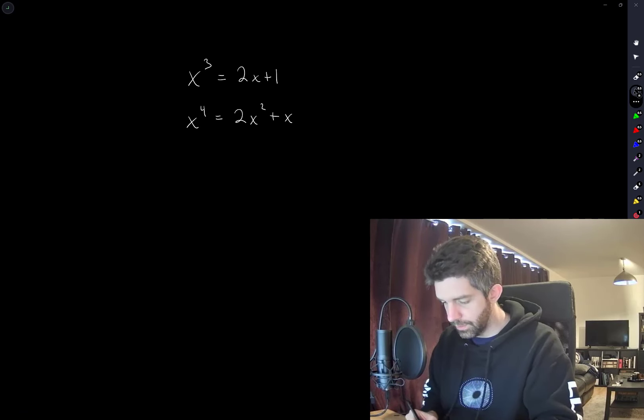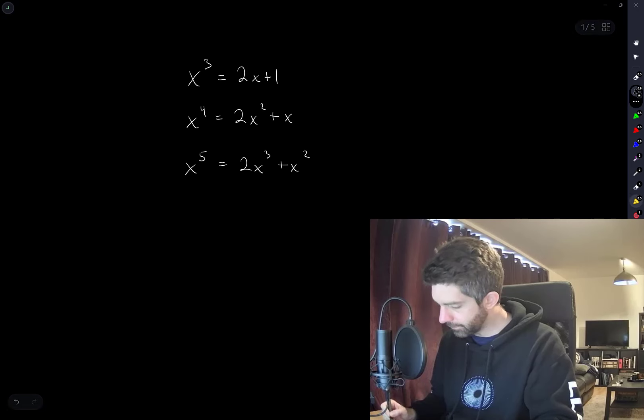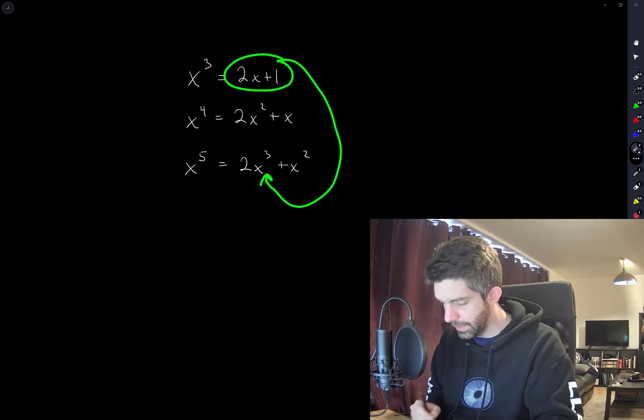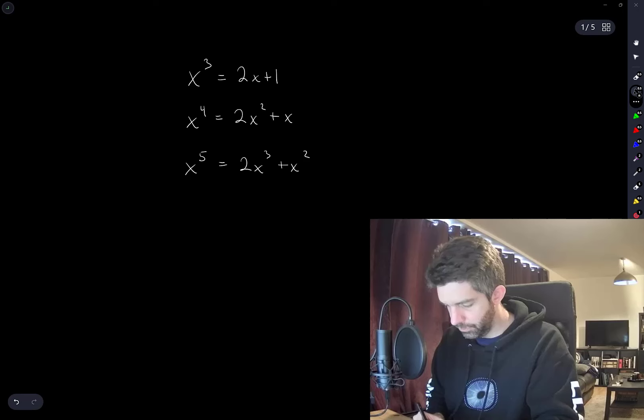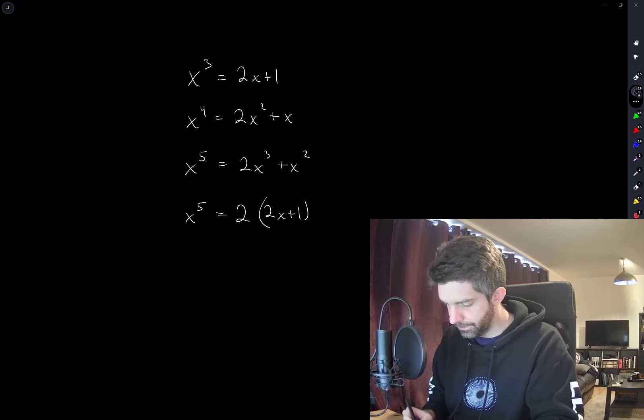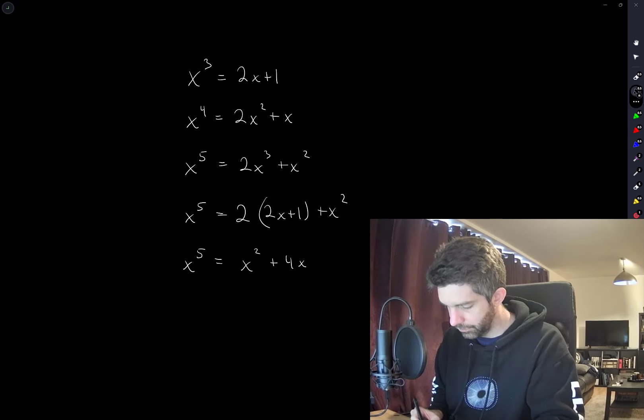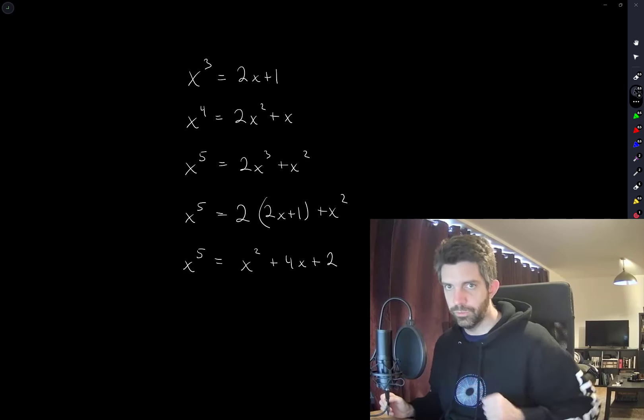And to get the last equation, I'm going to multiply both sides by x again. x to the 5 is equal to 2x cubed plus x squared. And then I'm going to use the original relation that x cubed is equal to 2x plus 1 and substitute that in here. So we have x to the 5 is equal to 2 times 2x plus 1 plus x squared, or simplifying x to the 5 is equal to x squared plus 4x plus 2, which is what we're asked to show.